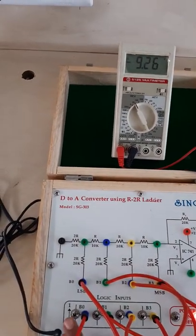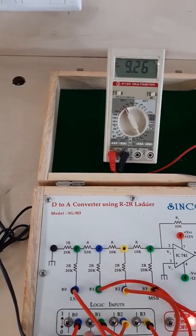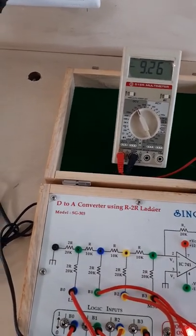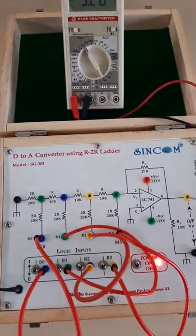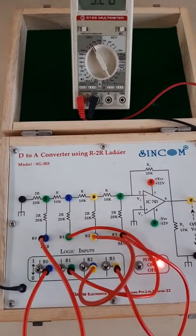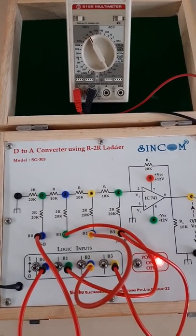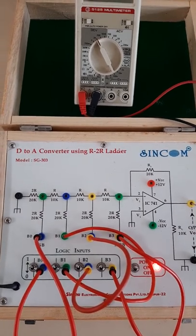So by applying or changing digital input we get the analog output here. This is the DAC, that is digital to analog converter using R by 2R ladder network. Thank you.